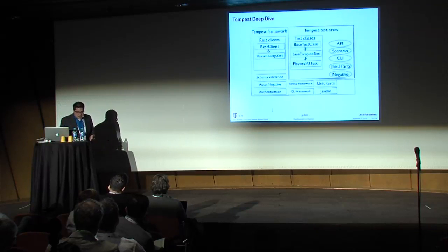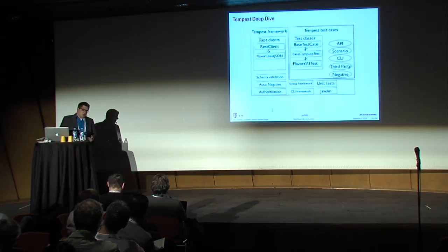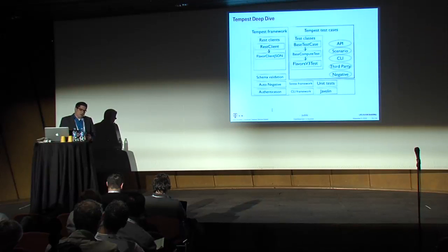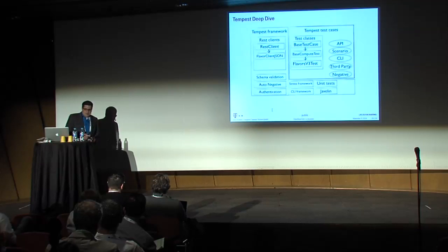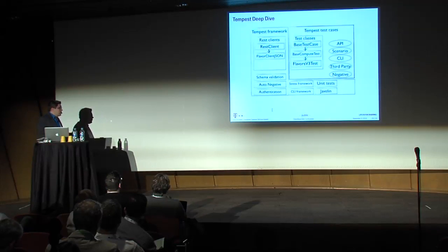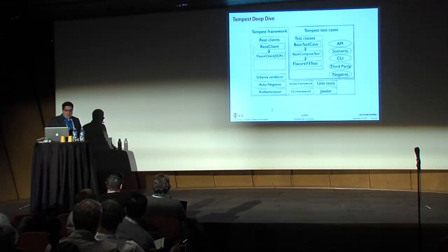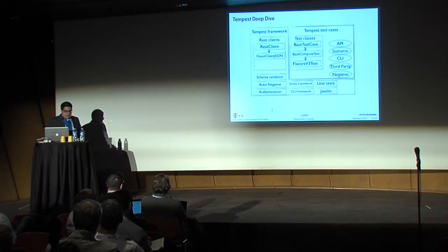We have automatic negative tests using the same approach: we define how a request is built and automatically generate negative tests from that. For example, if you're supposed to pass an integer value for memory, you instead send a string — it doesn't make sense and you expect an error. You usually don't have to care about authentication at all; it's handled in the base classes under the hood. You just describe what you want to test and authentication is taken care of.